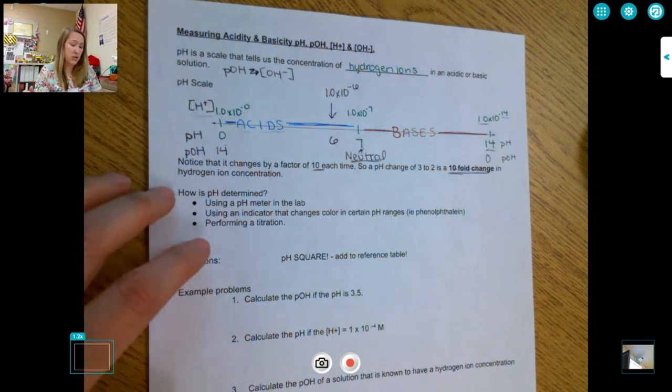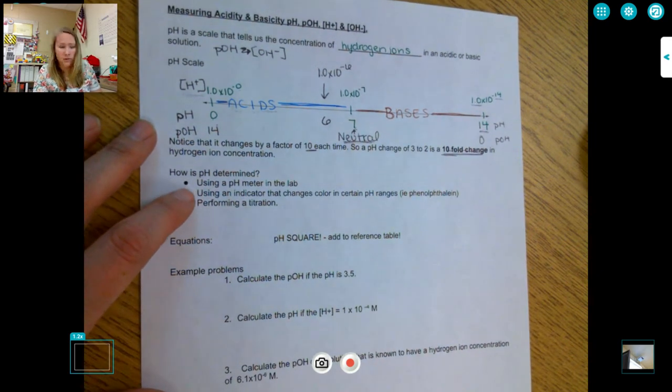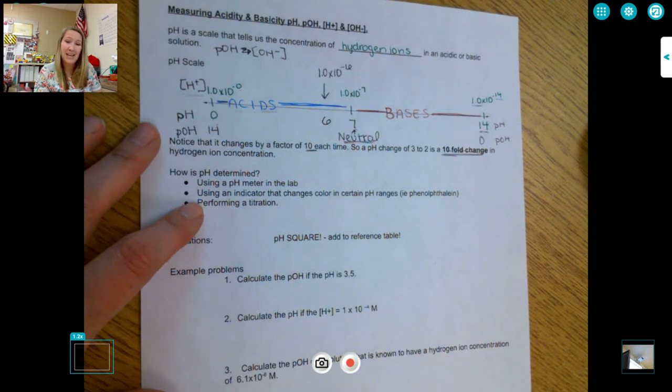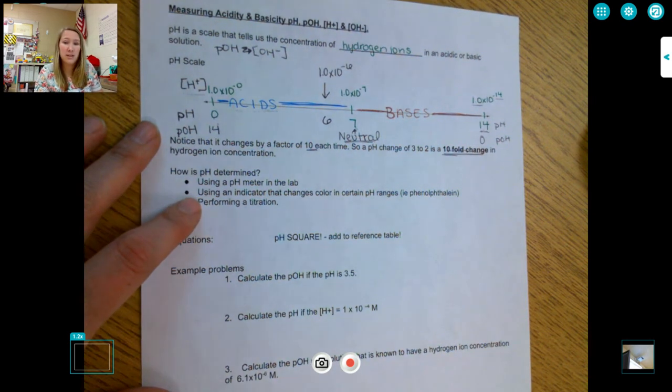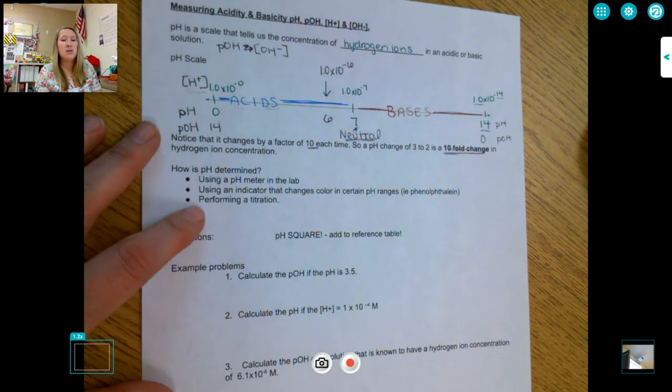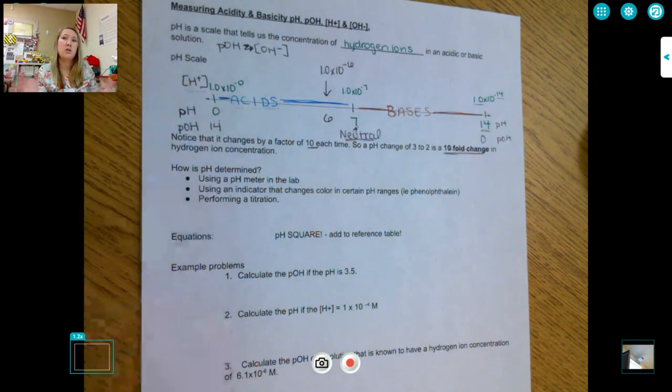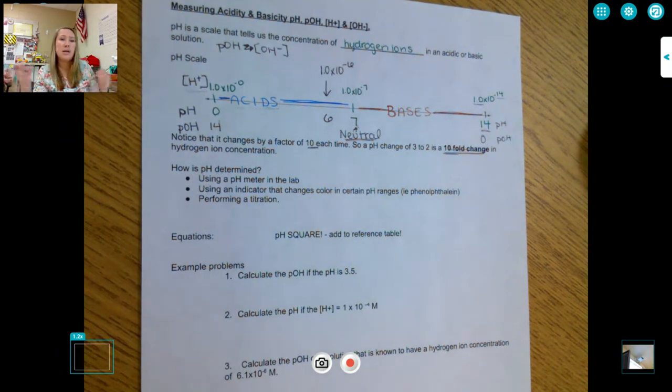We can determine pH by using a pH meter. College chemistry, you'll use one of those. You can use an indicator that changes colors in a certain pH range, such as like phenolphthalein turns pink in a base, and we've used that in our titrations. And then you can also perform a titration with a known solution and figure out the hydrogen ion concentration. Figure out concentration of one, and then do some titration calculations to figure out the concentration of the other one, and therefore the pH.